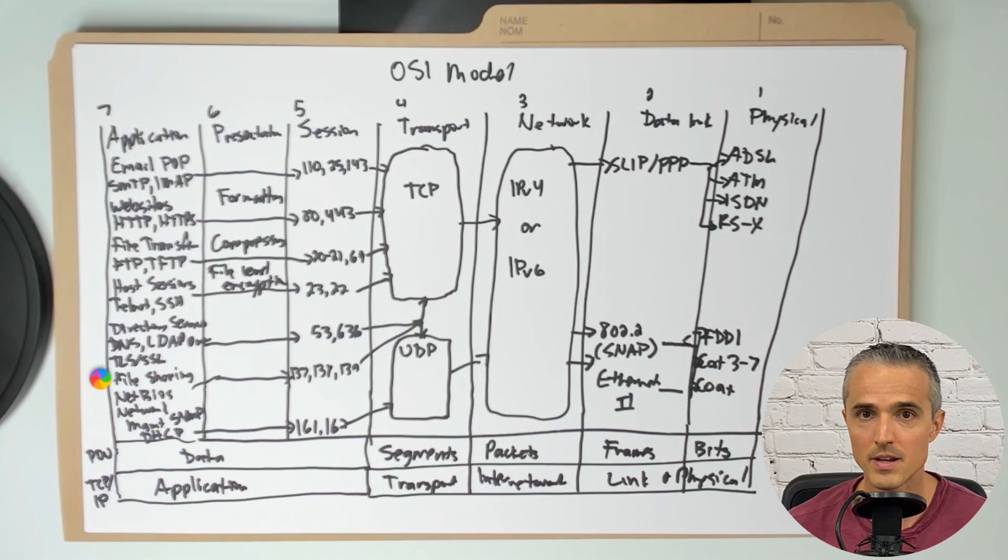File sharing with NetBIOS is the same. And then we have, for network management, simple network management protocol, and dynamic host configuration protocol. These are on ports 161 and 162 using UDP.